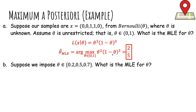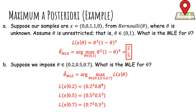Now let's add a constraint — suppose theta must be one of three numbers. The MLE doesn't require taking a derivative anymore since we're restricting to a finite set. We just plug in all three values into the likelihood and see which is largest. Plugging in 0.2, 0.5, and 0.8, the highest likelihood happens to be at 0.5. We don't care about the maximum value itself, just the argmax — the theta that achieves it.